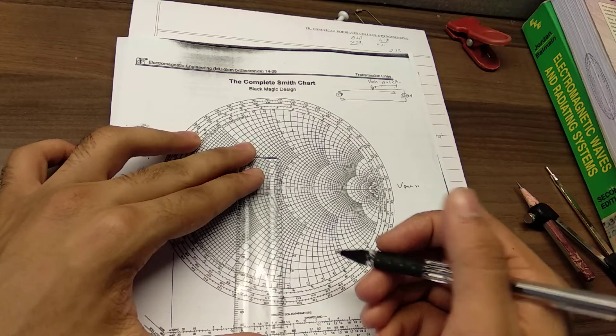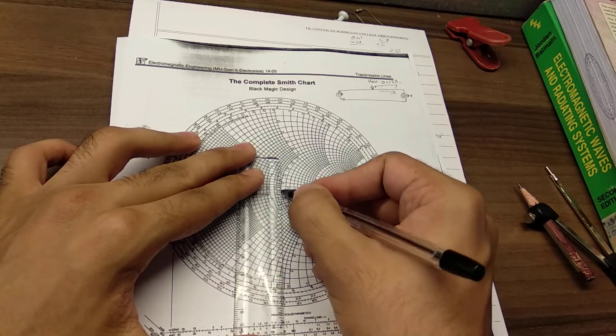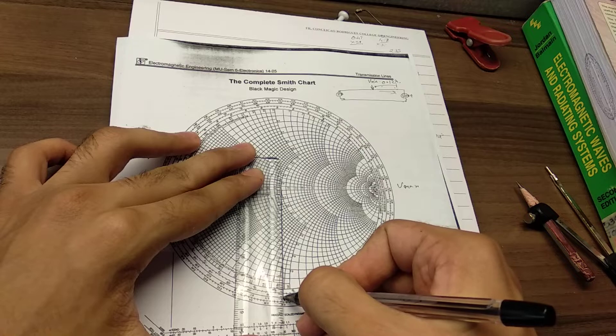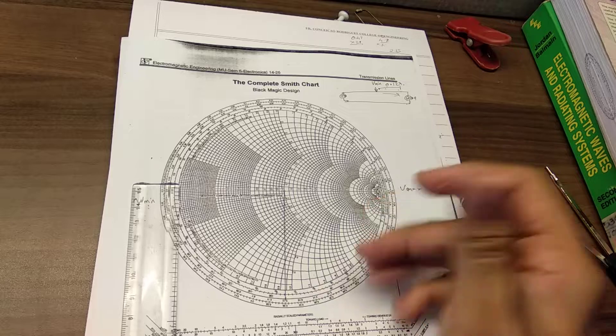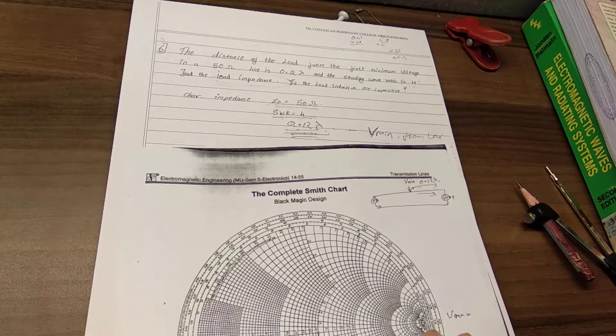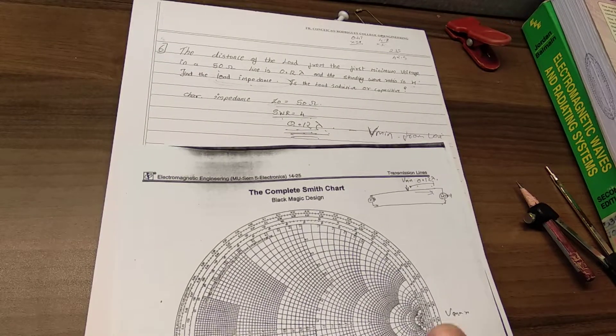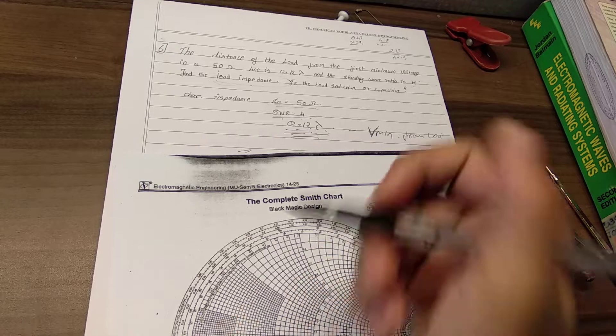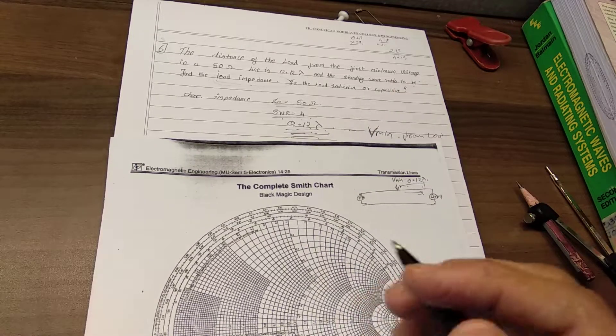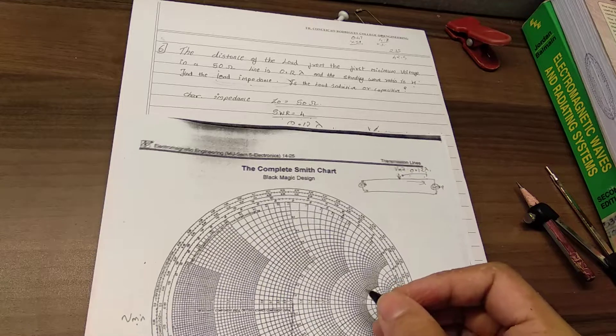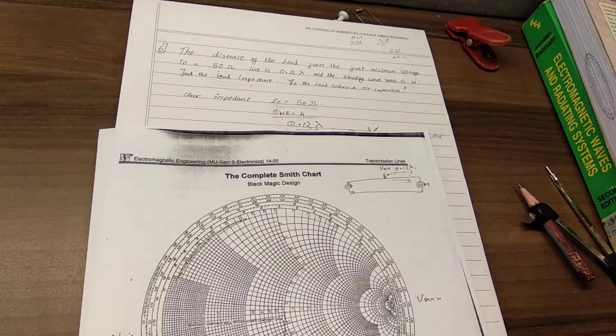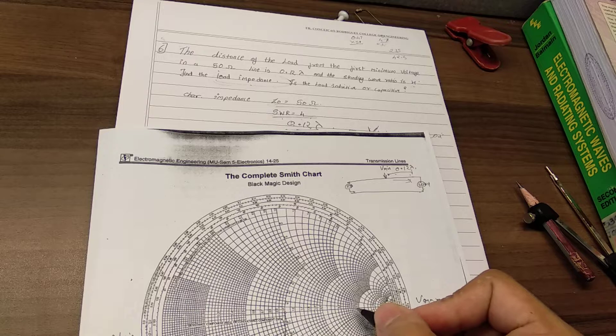Now this is done. So our ZL lies somewhere on this line. So how are we going to find out the point on this line? By using standing wave ratio. Now we know that standing wave ratio is basically nothing but the place where our constant VSWR circle cuts on the x-axis.